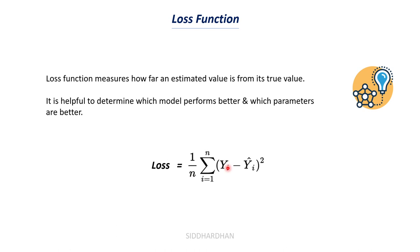Loss = (1/n) × Σ(yi − ŷi)², which is the mean squared loss. Here ŷi is the estimated or predicted value and yi is the true value. We find the difference between the true value and predicted value, square it — this is the error value — sum it for all data points, and divide by n. This will be your loss value. These three things — model parameter, hyperparameter, and loss function — are important to understand gradient descent.